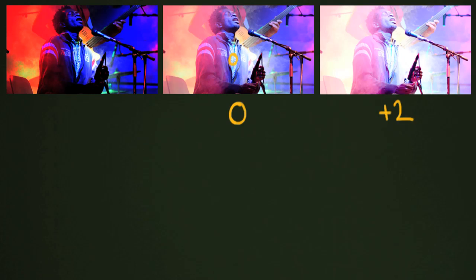Another thing I was doing while shooting was trying a couple of different exposures — that's essentially what bracketing is, though it's a more intentional version of that. I could have bracketed for a completely different light situation. For example, I could have overexposed by two stops, as shown in this edited version, or I could have underexposed by two stops. You can do that with exposure compensation.